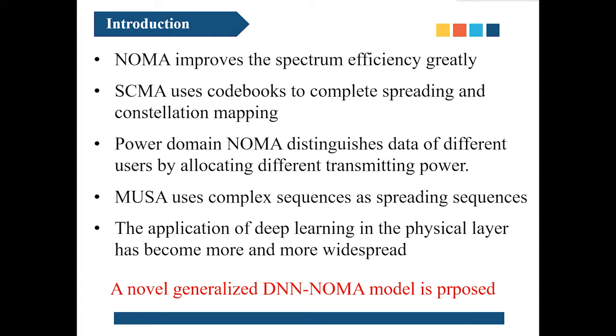Power domain NOMA distinguishes data of different users by allocating different transmitting power. Compared to OMA, the spectral efficiency of power domain NOMA can be improved by 30%. The optimal power allocation under different conditions and constraints has been studied by many researchers.